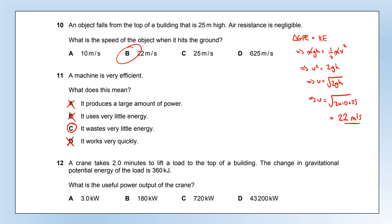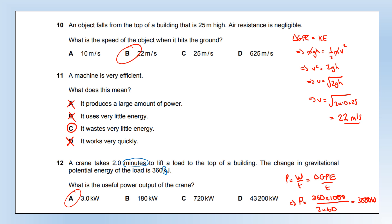A crane takes two minutes to lift a load to the top of a building. The change in gravitational potential energy of the load is 360 kilojoules. Pay close attention to units — we have minutes and kilojoules. Average power is work done per second. The work done equals the change in GPE: 360,000 joules. Two minutes equals 120 seconds. Power equals 360,000 ÷ 120 = 3,000 watts, or 3 kilowatts.